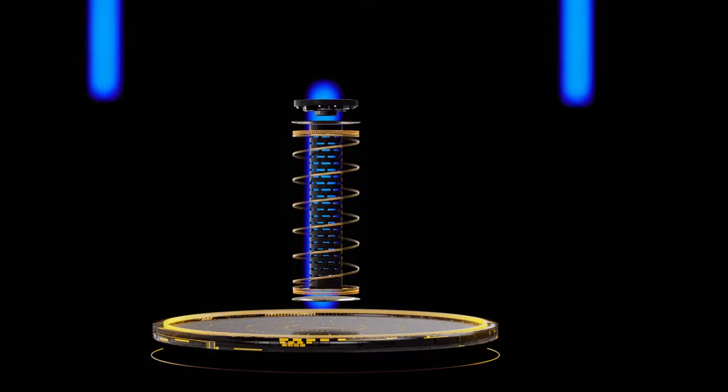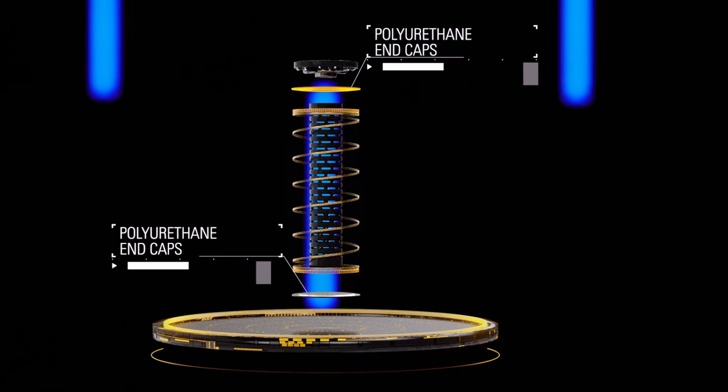We talk about the polyurethane end caps. The reason we do that is because we want to ensure the complete bond is there between the media pack and the end cap. So we use a liquid polyurethane, and then we cure it. Well, that ensures that the media cannot separate from the end cap.